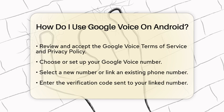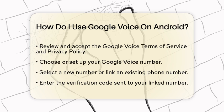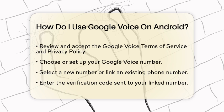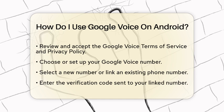Next, you will choose or set up your Google Voice number. You can either select a new number or link an existing phone number, like your mobile or landline. Linking a number allows you to receive calls and texts on that number through Google Voice. After you choose your number, Google Voice will send a verification code to the linked number. Simply enter this code in the app to confirm ownership of the number.